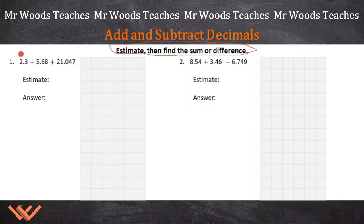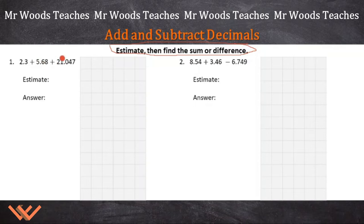So I can say that this is close to 2.5. Let's say this is close to 5.7 and 21. Actually, let's say 2.2 instead of 2.5. So 2 and 5 is 7.7, and then I have 21, so that's 28.7. Let's bump it up to 29, just to be safe. So I'm going to write 29.0 — that's my estimate.